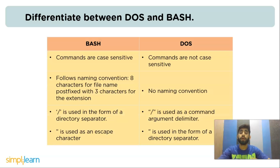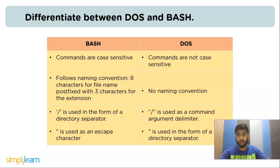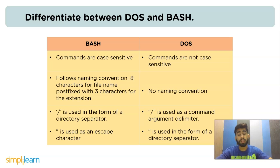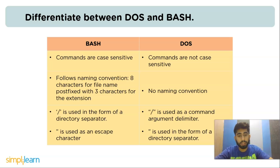The next question is: differentiate between DOS and Bash. Bash commands are case-sensitive whereas DOS commands are not case-sensitive. In Bash there are eight characters for the file name post-fixed with three characters for the extension, and in DOS no naming conventions are used. Additionally, in Bash the backslash is used as an escape character, while in DOS it is used as a directory separator.